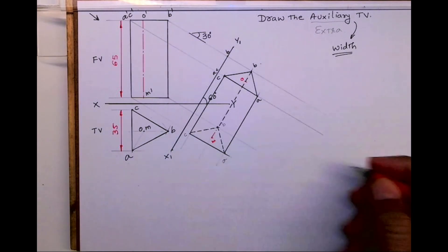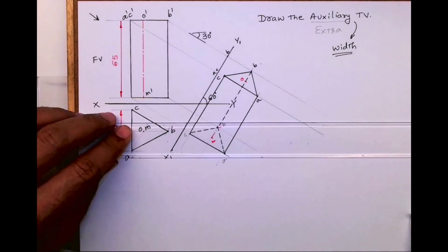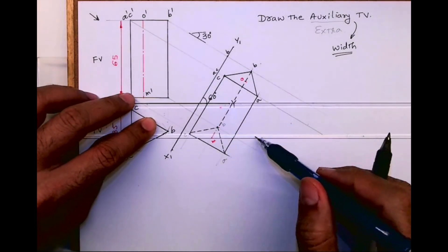And dotted is from B to B. So what we have done, we have done auxiliary top view. I hope you people have understood this.